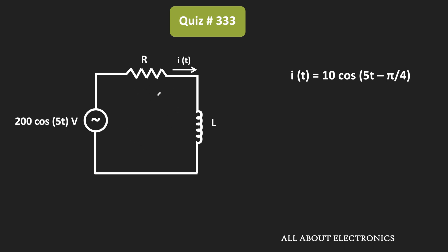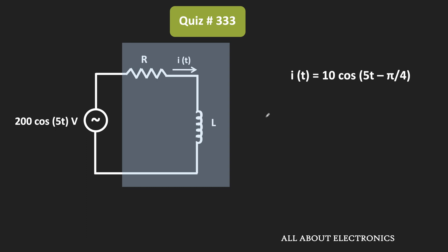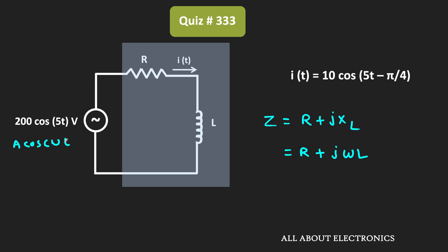Now here in this circuit, this resistor and the inductor are connected in series. So let's say the equivalent impedance is equal to Z. If we compare this input voltage signal, then ω is equal to 5 radians per second. So we can say that Z is equal to R plus j times ωL. Let's call this equation number 1.